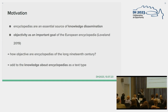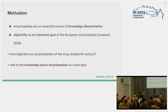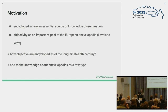Our motivation was the following. It stems from the fact that encyclopedias are an essential source of knowledge dissemination. As knowledge that may shape a people's view on any topic, objectivity should be an important goal of the encyclopedia. But it may not always have been that way. So our main question is: how objective are encyclopedias of the long 19th century? And in trying to answer that, we want to add to the knowledge about encyclopedias as a text type.